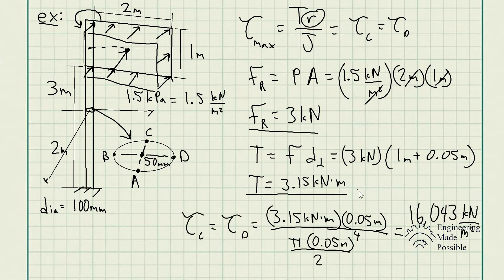Finally, after plugging in all the values, the shear stress at both point C and D are equivalent, which gives us 16,043 kilonewtons per meter squared, or 16,043 kilopascals, or you could convert it to megapascals, 16 megapascals approximately. This is the shear stress caused due to the wind loading on the post.